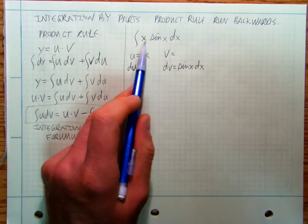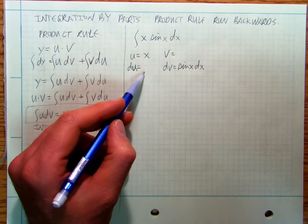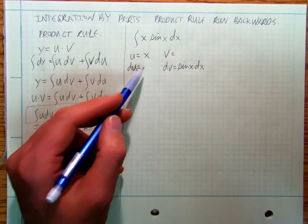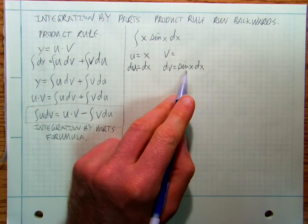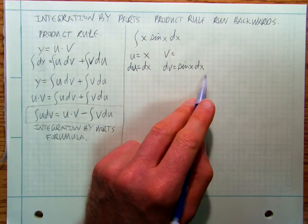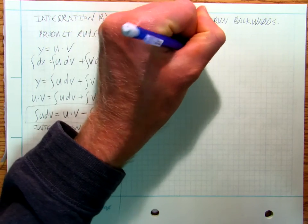So this is my u, this is my dv. Now I want the derivative of this. The derivative of x is going to be dx.